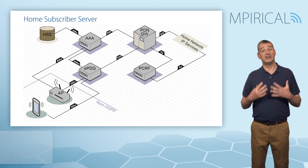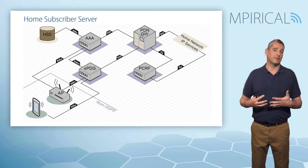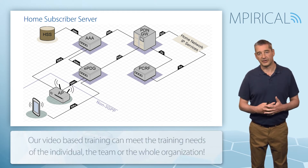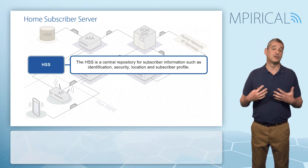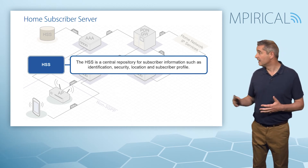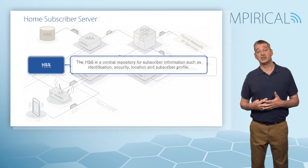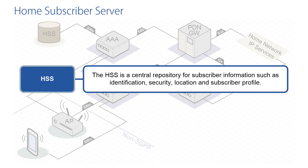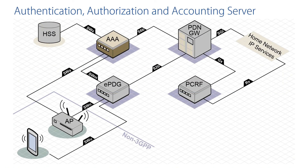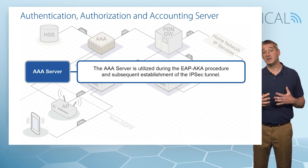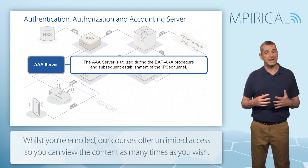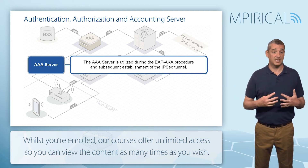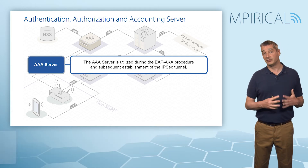Moving away from the network elements dealing with user plane traffic, we also have elements dealing with control of the system. The first is our home subscriber server — our master database used across the cellular network, storing subscriber information and profiles, serving as the central repository for authentication and profile data. The next element is the AAA server, the authentication, authorization and accounting server, which plays a critical role during the establishment of the IPSec tunnel. Using a process termed EAP-AKA, the AAA server authenticates the subscriber and ensures that only legitimate subscribers gain access to the network.